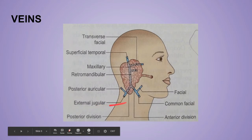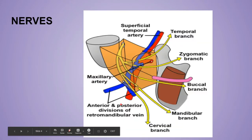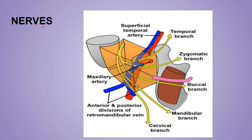The posterior division, after uniting with the posterior auricular vein, forms the external jugular vein. Next are the nerves. From medial to lateral we have artery, vein, and nerve — so laterally we have the nerves.